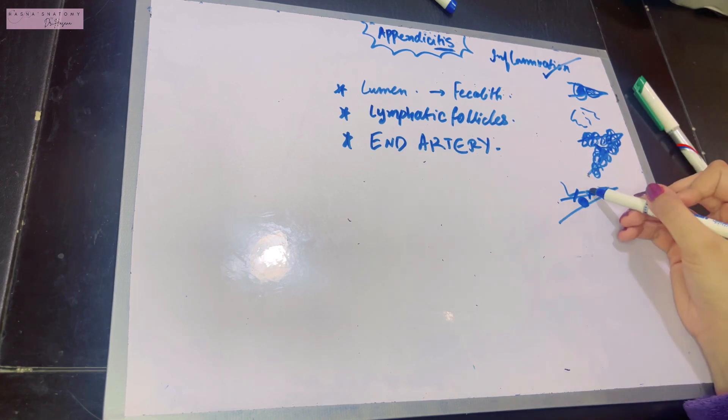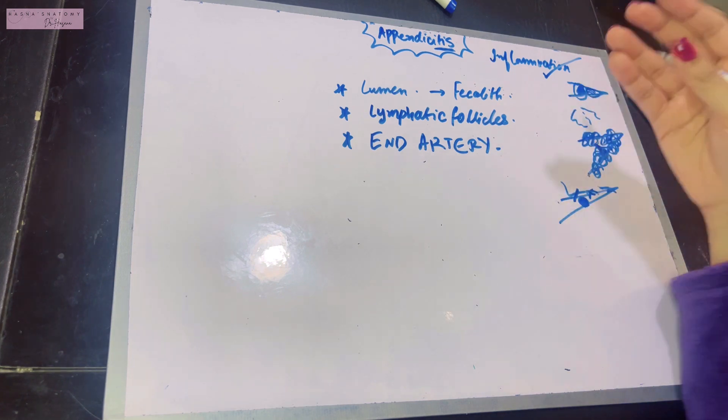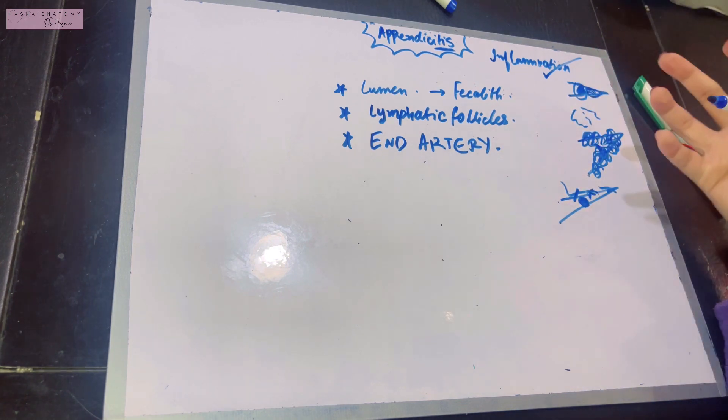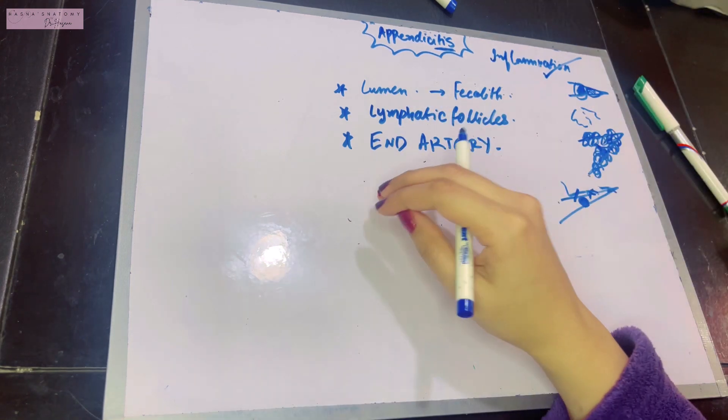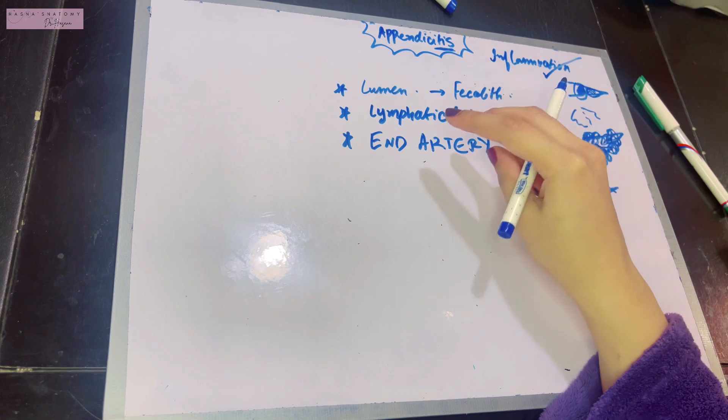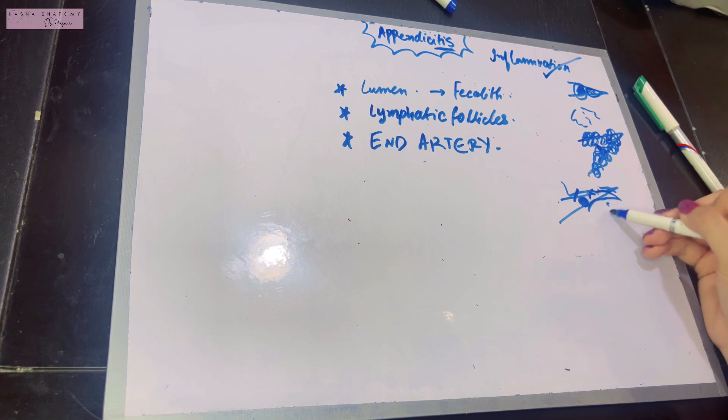Whenever there's compromised blood supply, there is increased infection and ischemia, meaning oxygen is not reaching the area. When there is cutting off of blood supply, necrosis of that organ occurs. This can lead to rupture of your appendix, and the inflammation and infection can spread all around.